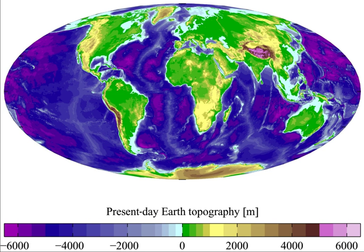Once land became capable of supporting life, biodiversity evolved over hundreds of millions of years, expanding continually except when punctuated by mass extinctions. The two models that explain land mass propose either a steady growth to present-day forms or, more likely, a rapid growth early in Earth history followed by long-term steady continental area. Continents formed by plate tectonics, a process ultimately driven by the continuous loss of heat from the Earth's interior. On timescales lasting hundreds of millions of years, the supercontinents have formed and broken apart three times.